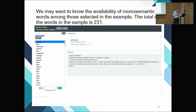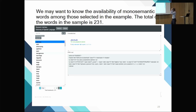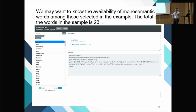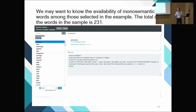This is a variation of the previous result — it's a smaller subset. Of the 313 borrowed words in Spanish, you then search within that for mono-semantic words — words with only one meaning — giving 231 results. These are all words with just one definition.